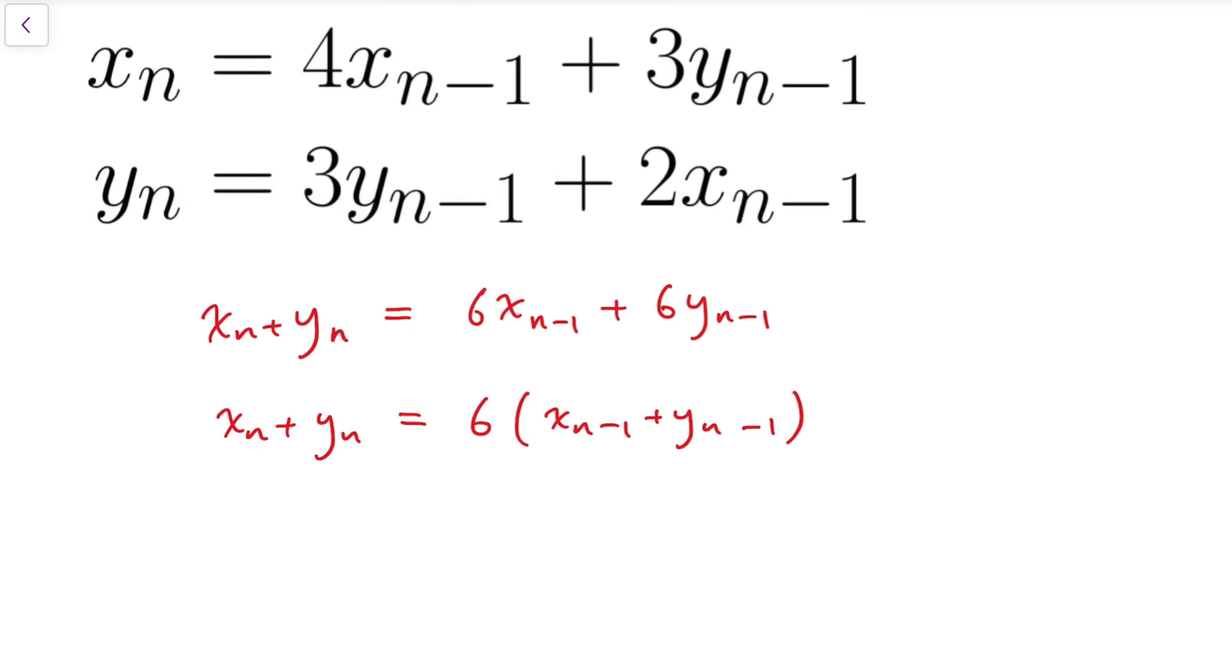...so that xn plus yn is equal to 6 times the previous term in the sequence x plus y. And from this, we can say that actually it's kind of recursion. For this, we can write this as 6 to the power n times x0 plus y0. And because both x0 and y0 are 7, so that means the sum of xn and yn is equal to 14 times 6 to the power n.